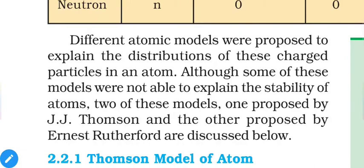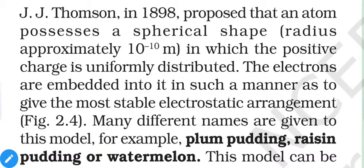Different atomic models were proposed to explain these phenomena as well as the distribution of positive and negative particles in the atom. Two models — one proposed by J.J. Thomson and another by Ernest Rutherford — are discussed below. According to Thomson's model, atoms are spherical in shape with a diameter of 10⁻¹⁰ meters, in which positive charge is uniformly distributed. Imagine a globe-shaped vessel filled with a positively charged liquid, with electrons embedded in it.